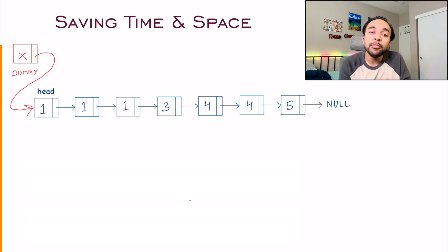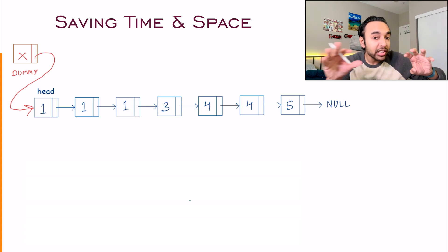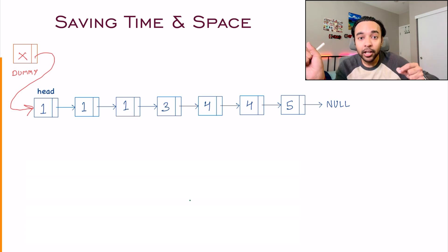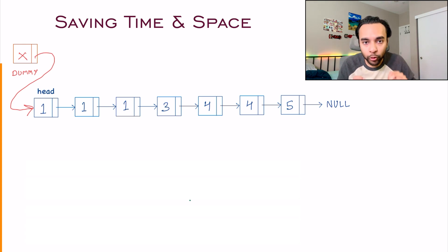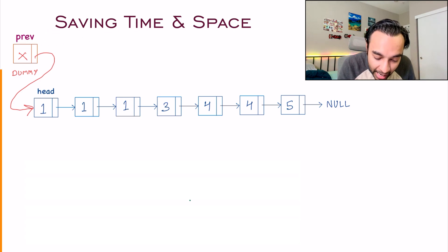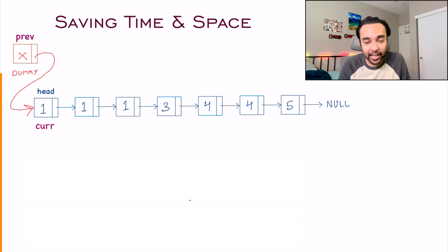The next thing to take advantage of is that this list is already sorted. It simply means that all of these duplicates will be adjacent to each other. So you can simply iterate over the list and see that if adjacent elements are the same, you can remove them. To start off, we will take the help of two more pointers: a previous pointer that points at the previous node, and a current pointer pointing at the head right now.